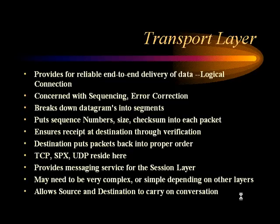The transport layer provides for reliable end-to-end delivery of data, and it does this through a logical connection. It is also concerned with sequencing and error correction. This is where datagrams from the session layer get broken down into segments. When the receiving host gets the data, how does it know what order to put the data back into? If it didn't send a notification that it didn't receive something, then the information got out of sequence when it was resent from the sending unit.